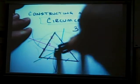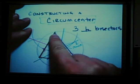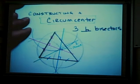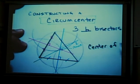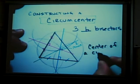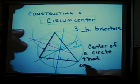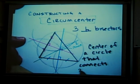I can demonstrate that's true by drawing a circle that goes through each vertex with that as my center. That is the value of a circumcenter. It is the center of a circle that connects three vertices.